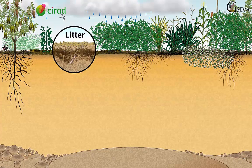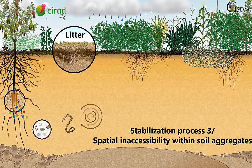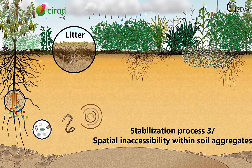Stabilization of soil organic matter is also ensured by its spatial inaccessibility to microorganisms through the process of soil aggregation. The process of soil aggregation is driven by the intense activity of the soil biological activity, in particular microorganisms, earthworms,